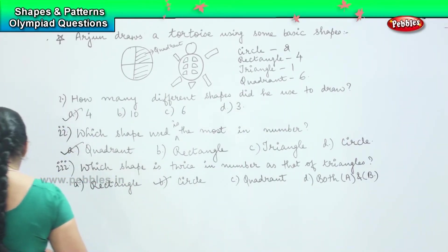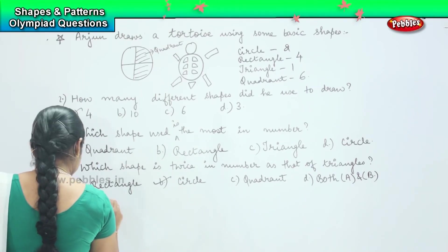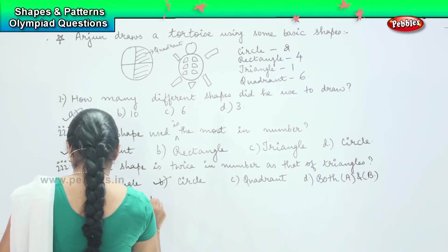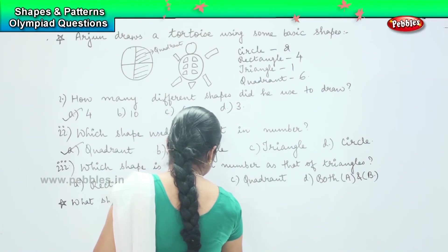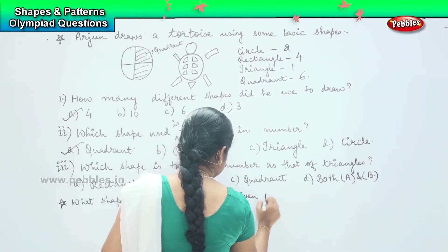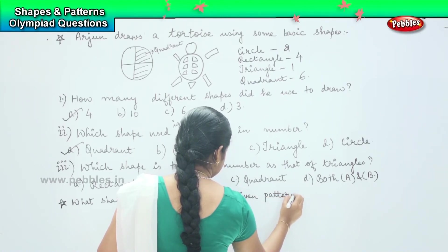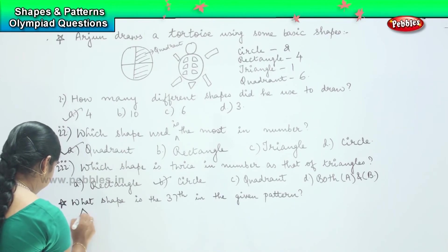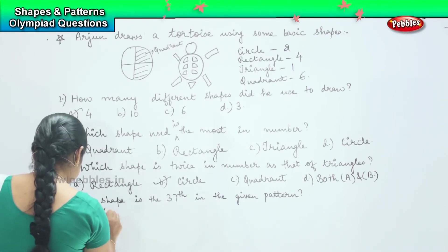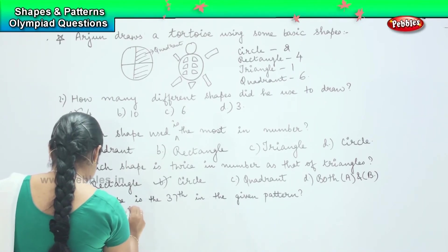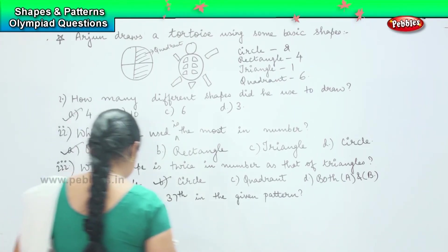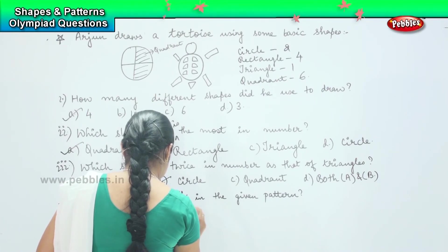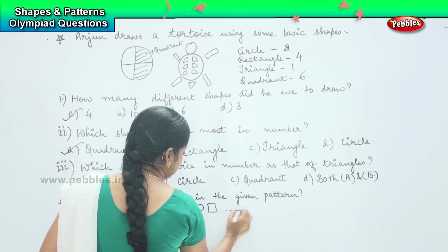The next question says: What shape is the thirty-seventh in the given pattern? And this is your pattern given, and then it continues.